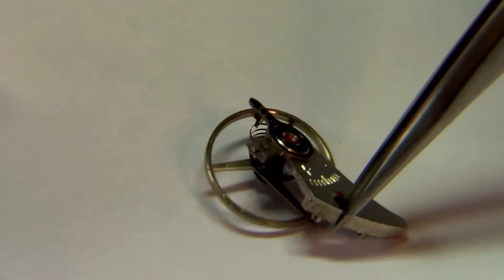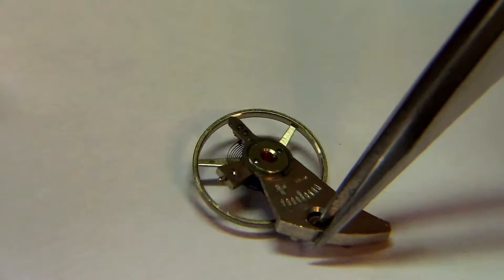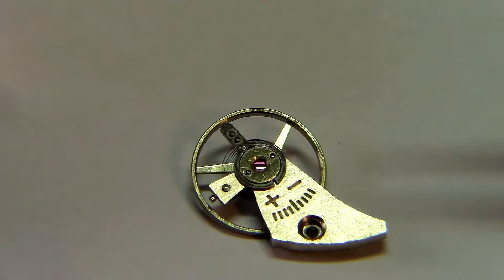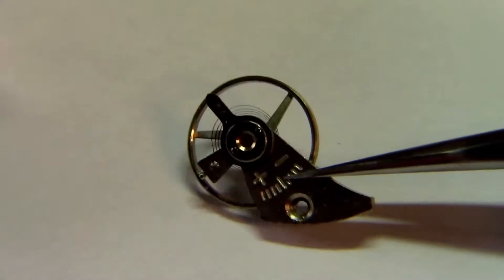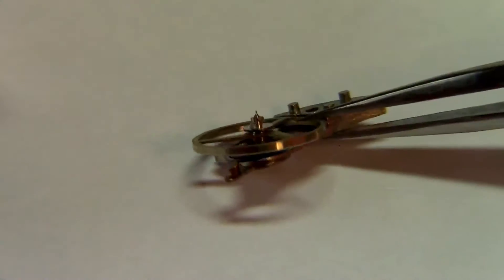And it's exactly the frequency of this back and forth movement that actually determines the accuracy of the watch. This is what regulates how fast or how slow the gears will move.